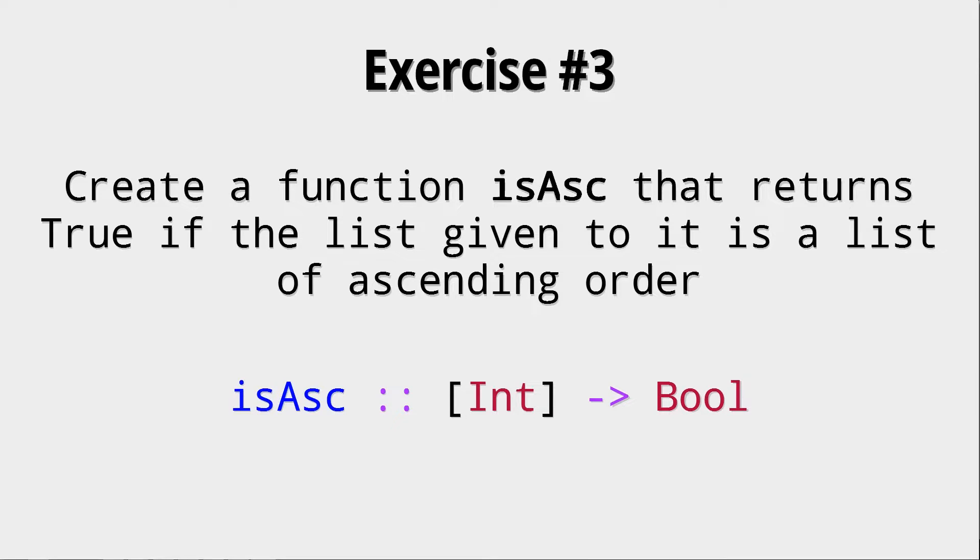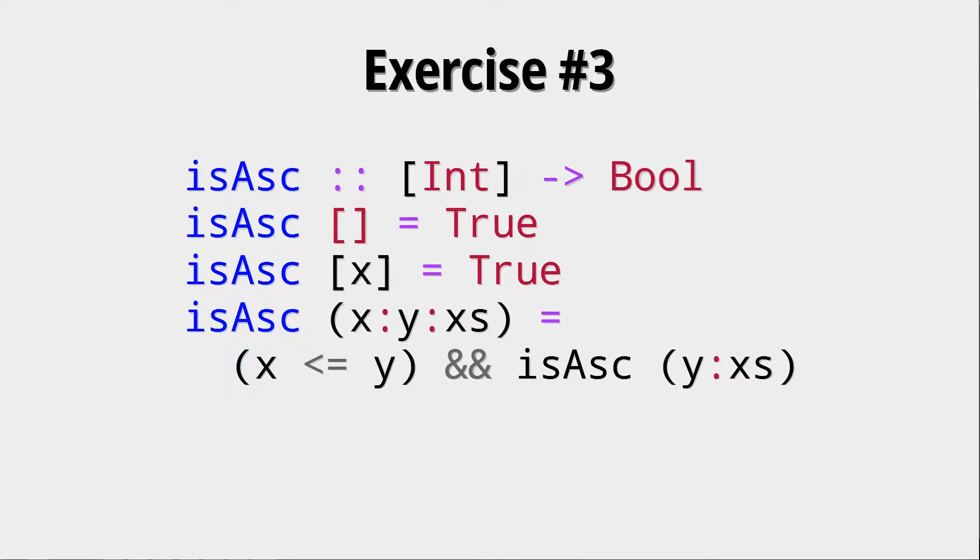Let's look at a solution. This can be done with three patterns and those three patterns maybe look a bit weird because we haven't explicitly talked about the third pattern. Let's look at the first two. Well, if there are no elements in the list or if there's one element in the list, the list has to be of ascending order.